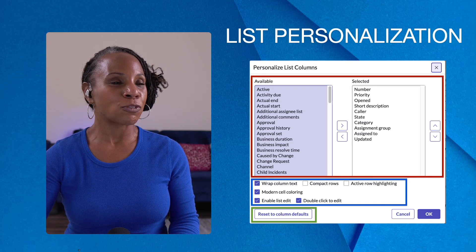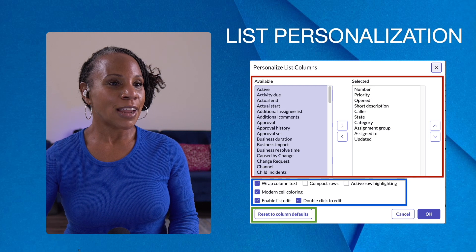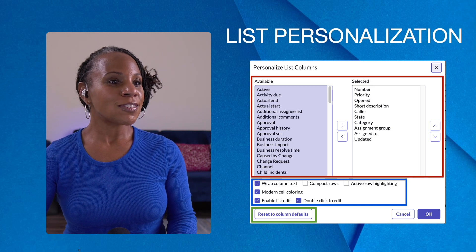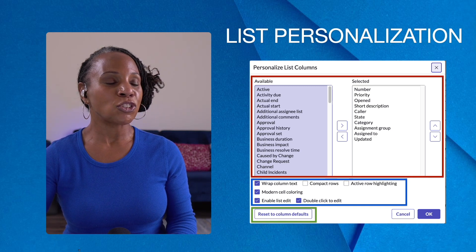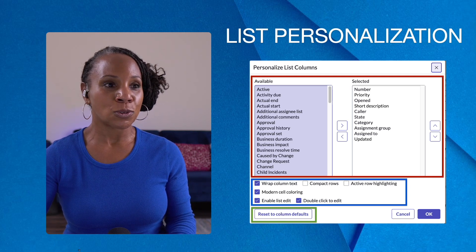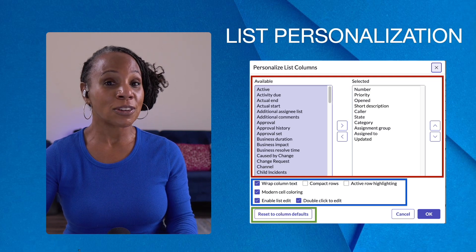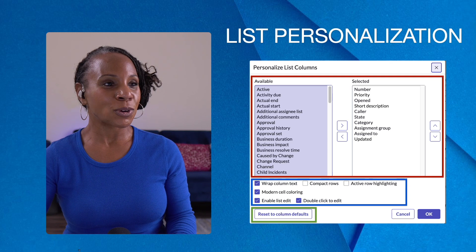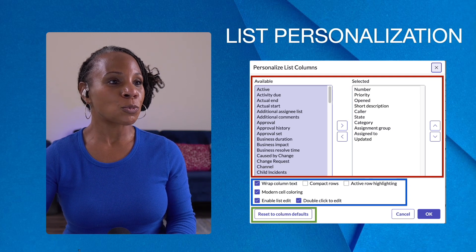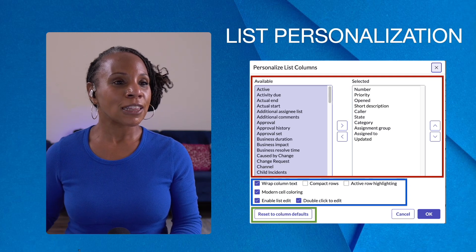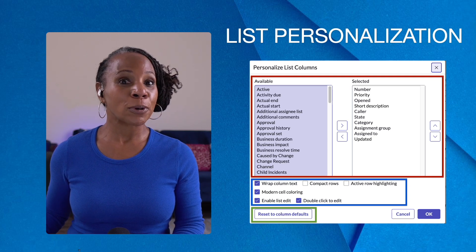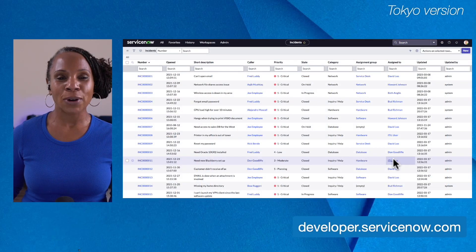The blue box contains all list options. Any changes you make in this area affect all of your list views — but keep in mind this is just for you; no one else in the organization is affected. Finally, in the green box, you see the option to reset to column defaults.